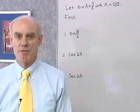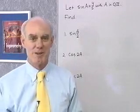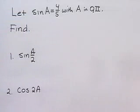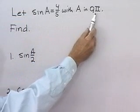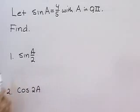We want to work now with our half-angle formulas, and I've written our first problem over on the board. We want to say, let's let sine A equal 4 fifths with A in quadrant 2, and find sine of A over 2, cosine of 2A.